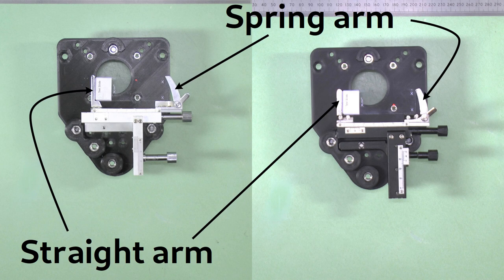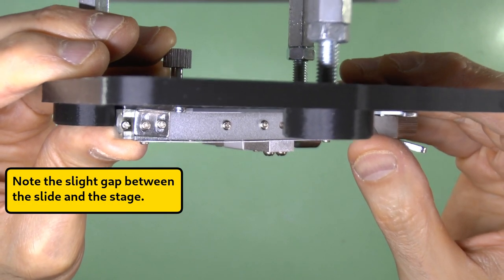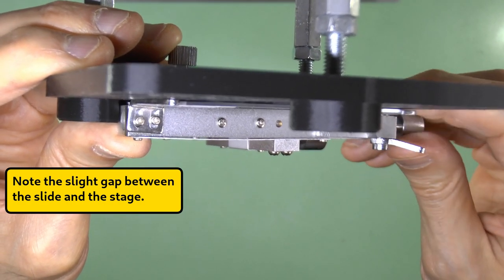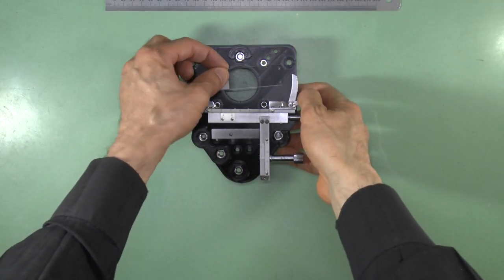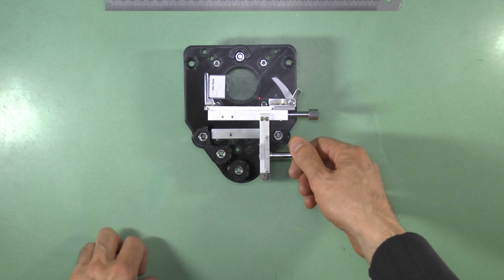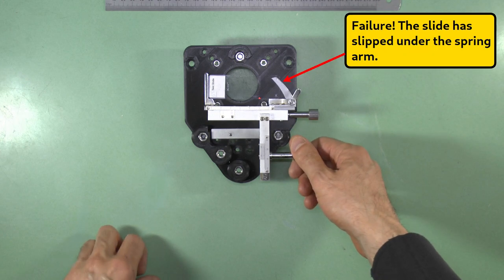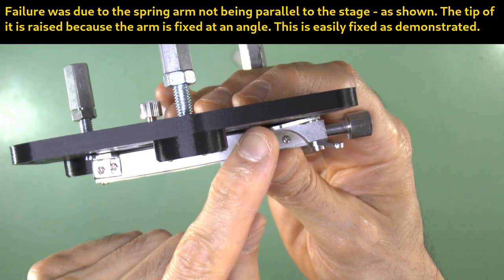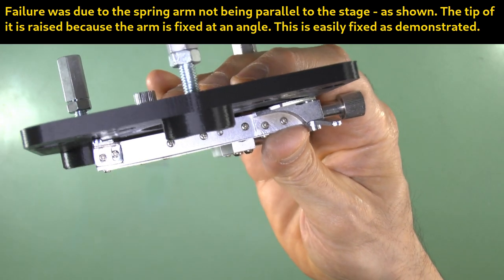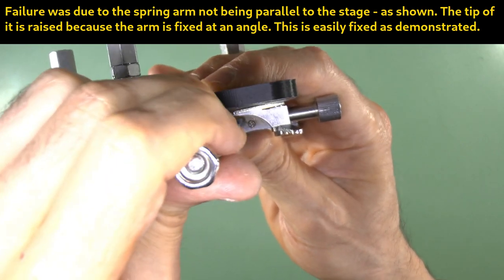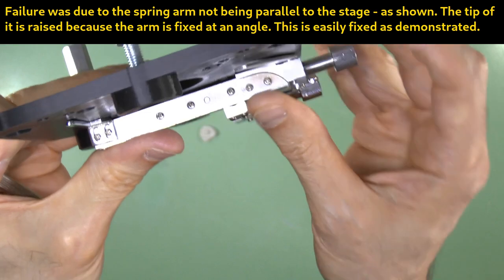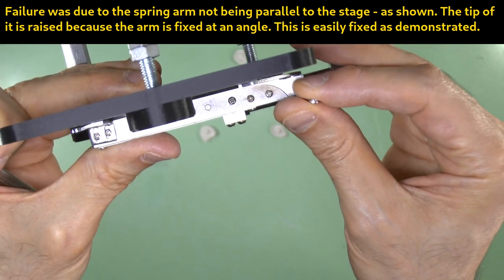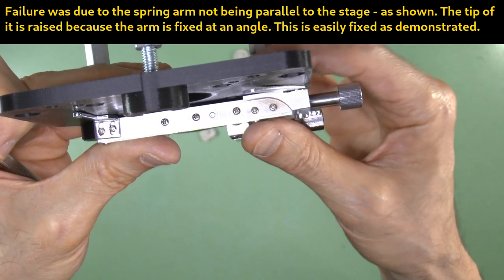One other adjustment you may need to make for both types of slide holder is to ensure the spring arm and straight arm both lie flat with respect to the stage. These holders work by holding the slide off the stage slightly by gripping the slide between the two arms. However, this won't work if the arms are not parallel to the stage and close to it. You can effect adjustment of this using these two screws for each arm. For example, here I show how the spring arm position can be altered using these screws. The same type of adjustment can be done for the straight arm.